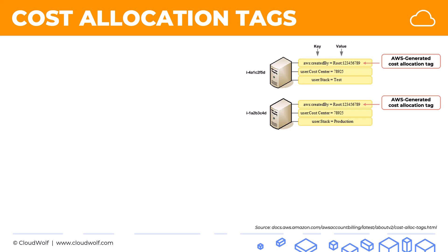There are two types of tags in AWS — remember this for the exam. First, there are AWS generated tags that are created by AWS automatically and contain information like who created this resource. Second, there are user-defined cost allocation tags, which you can create and define however you like, whatever suits your organizational needs.